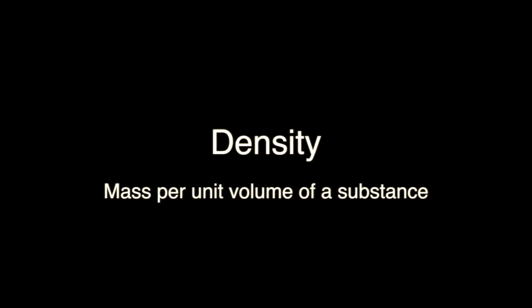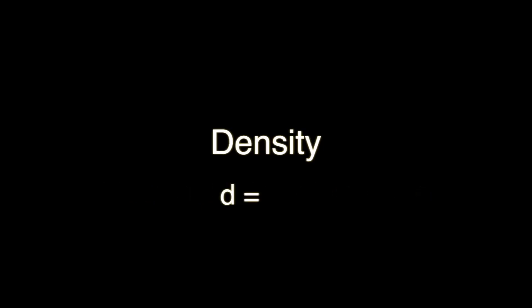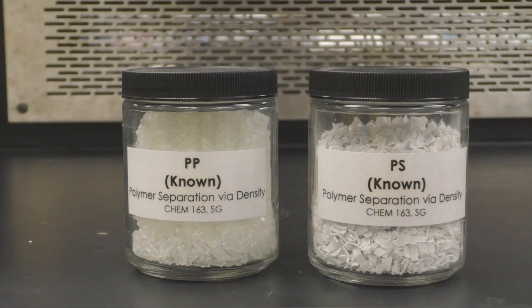Density is a measure of the amount of mass per unit volume of a given substance or material. Density is commonly defined as mass divided by volume and often has the units of grams per milliliter. In this example, we will be looking at how to use a liquid to separate polypropylene from polystyrene.